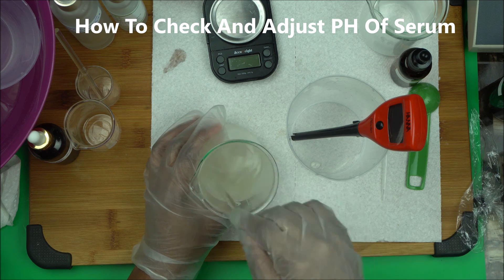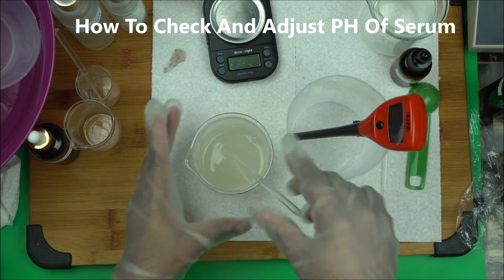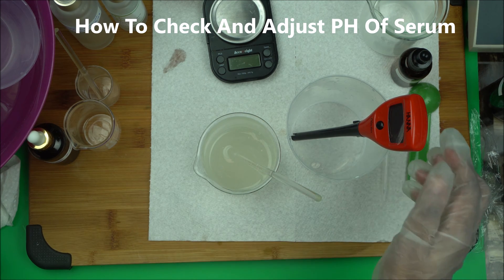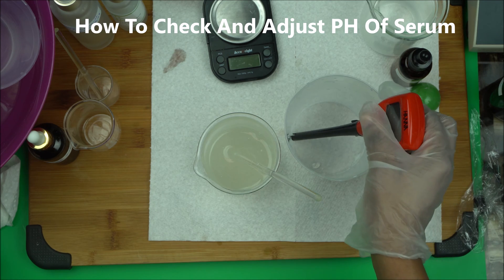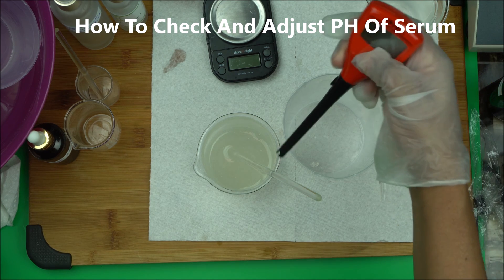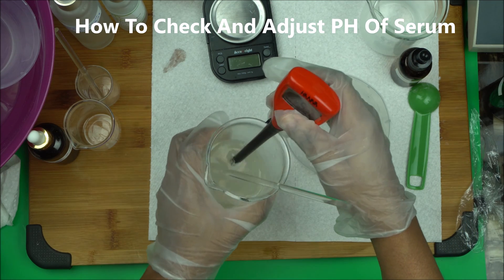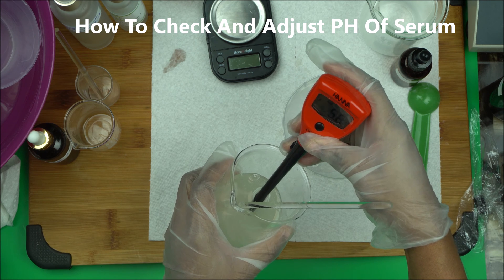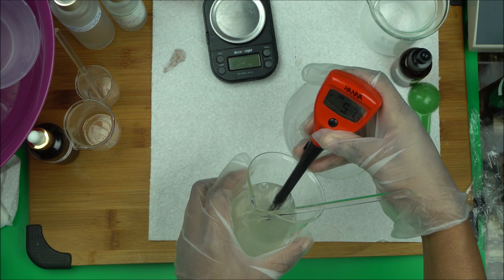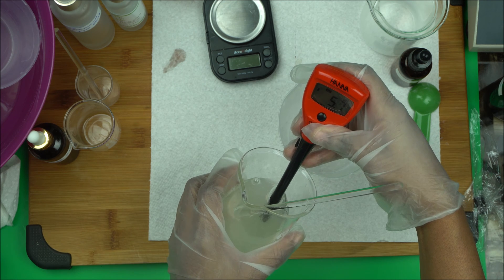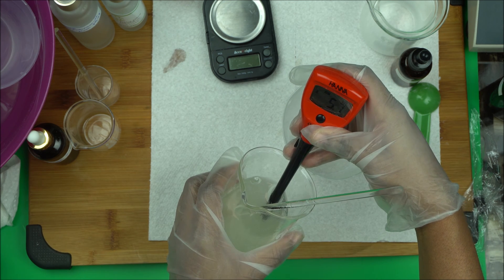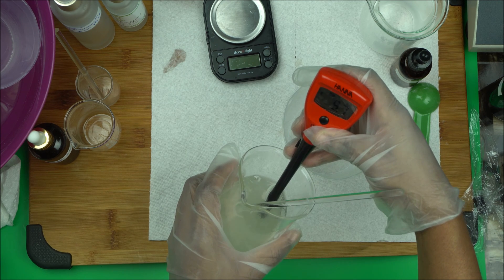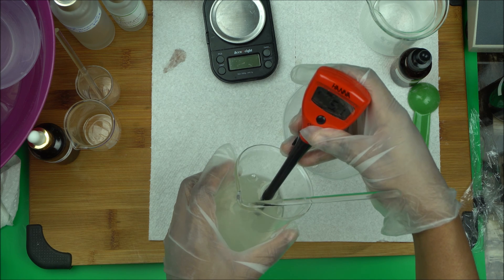So I have the serum here with me. The first thing you want to do is to check the pH. There are two ways to check the pH. The first thing, you can just take your pH meter, turn it on, and dip it inside your serum. That's one way of checking the pH. So just put it in and wait for the reading.